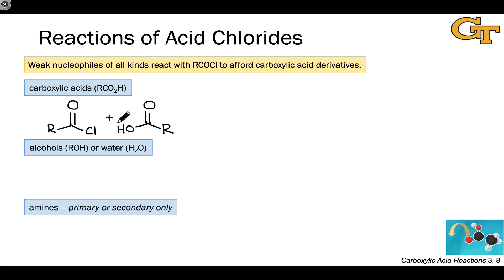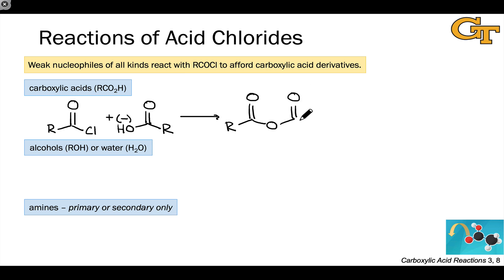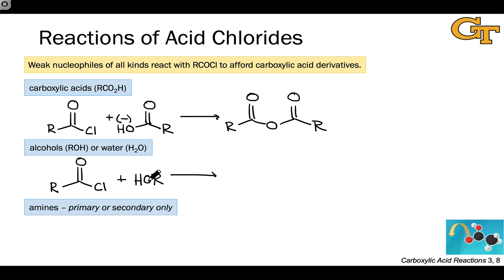Looking at some examples: we can treat an acid chloride with a carboxylic acid or carboxylate — in both cases, we'll see spontaneous substitution of the chloride by the carboxyl or carboxylate group to generate an anhydride. In the presence of alcohols or water, acyl chlorides react to give either esters or carboxylic acids — for example, the alkoxy group of an alcohol displaces chloride to generate an ester, and when water is the nucleophile, we get a carboxylic acid. This is a common reaction of acyl chlorides and tends to be a problem, as these are water-sensitive reagents because water is a good enough nucleophile to displace chloride.